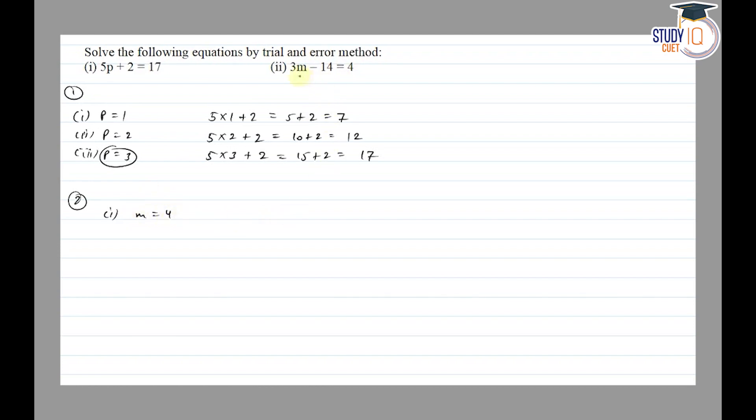Then 3 into 4 minus 14 is equal to, so 3 times 4 is 12, minus 14 is equal to minus 2. Minus 2 is not equal to 4.